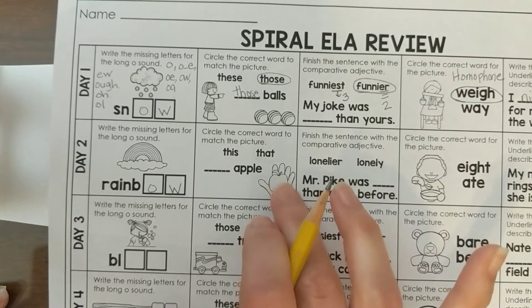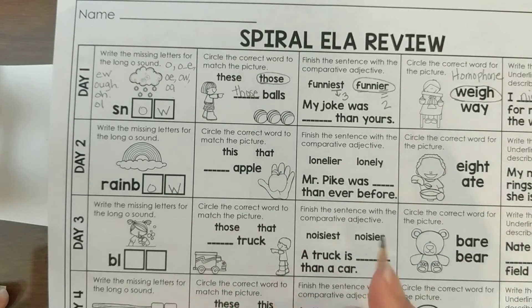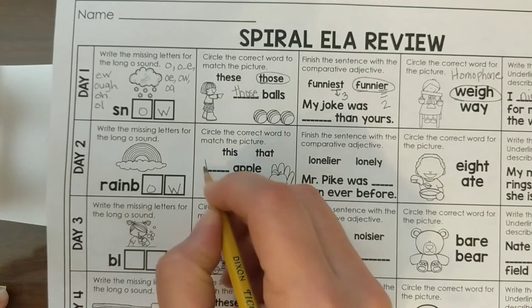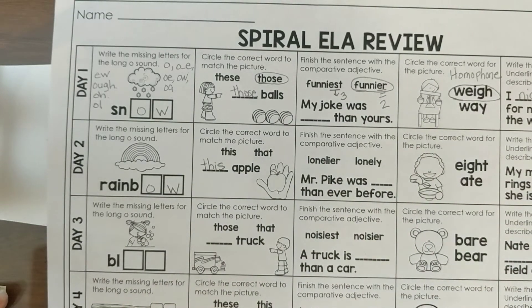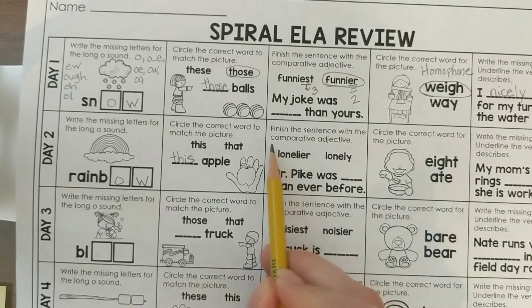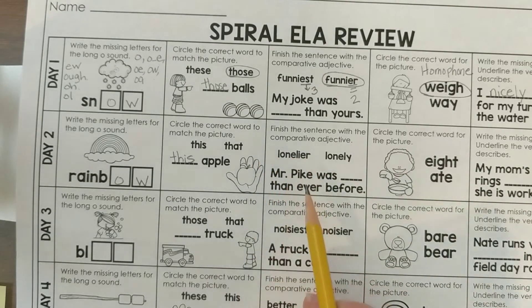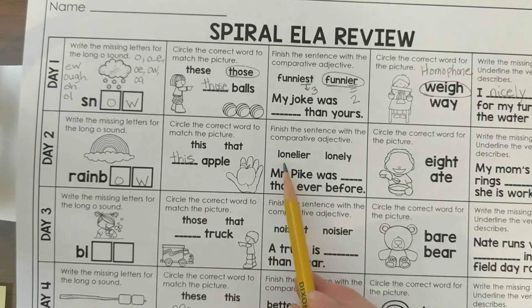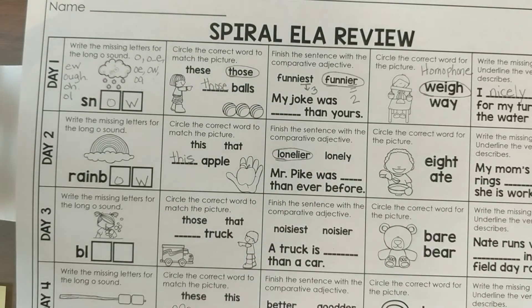We have an apple in the person's hand — it's right in front of them. We need to write the comparative adjective. Comparing means you're saying if it's more than or less than somebody else next to you. So: Mr. Pike was lonelier than ever before.